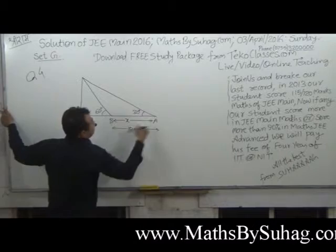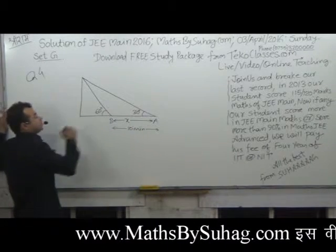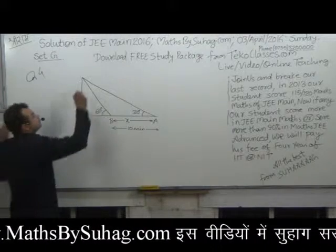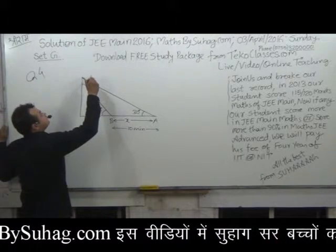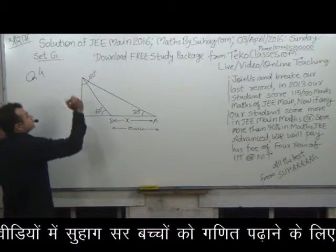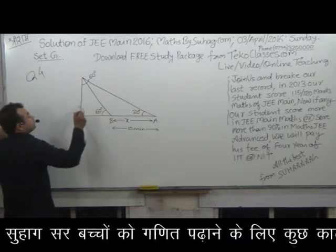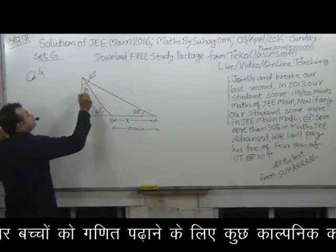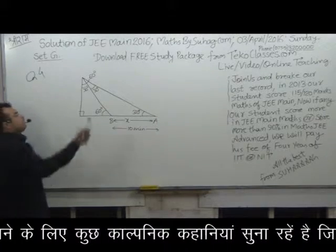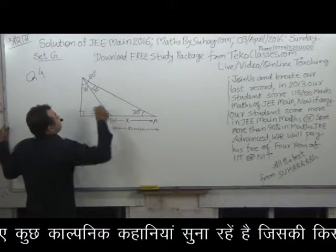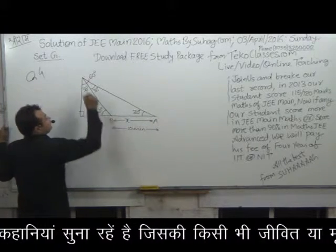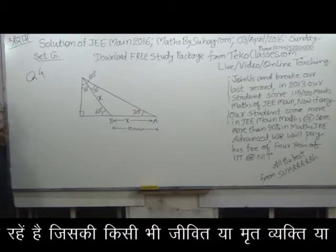इसके बीच की दूरी X — हमें ये निकालना है। अब आप जादू देखो। ये पूरा angle 60 degree, क्योंकि 30 और 90 तो 60। अब ये 60 और 90 तो इतना 30 — इसलिए ये भी 30। मेरी बात समझे? ये isosceles triangle हो गया। इसलिए ये दूरी भी X हो गई।